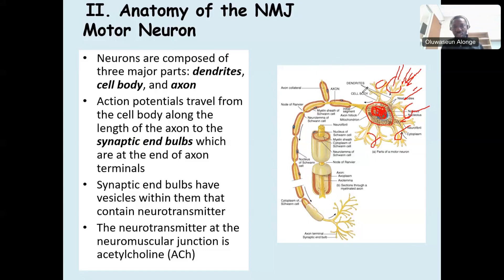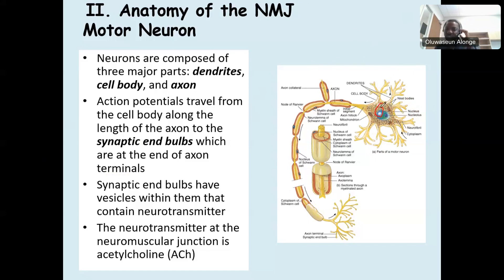The soma processes the message and comes up with an action plan. What is generated is called action potential — it's an impulse. Action potential means the potential for action — an action that could happen. Think of it like an impulse: you feel compelled to do something and you act on it. So what the soma generates is the action potential.